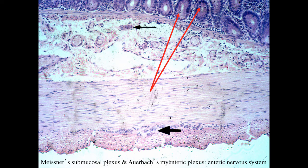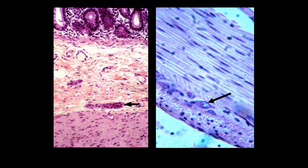At higher power, the submucosal plexus and the myenteric plexus are visible alongside mitotic figures. The inner circular layer of the muscularis externa, outer longitudinal layer, and serosal surface are seen. Look at the large neurons — the cell body, nucleus, and nucleolus. Oftentimes in the muscularis externa, you'll see the myenteric plexus running almost all the way around the cross-sectional profile of the tube.